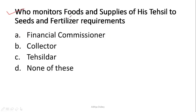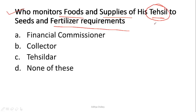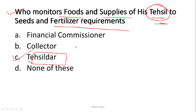The next question is: who monitors food and supplies in his tehsil regarding seeds and fertilizers requirements? The catchy word here is 'tehsil,' so wherever the word tehsil appears, you can easily guess the answer is Option C — Tahsildar. The Tahsildar monitors food and supplies of his tehsil regarding seeds and fertilizers requirements.